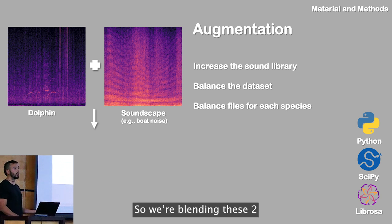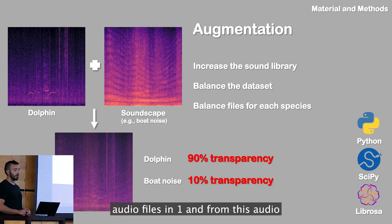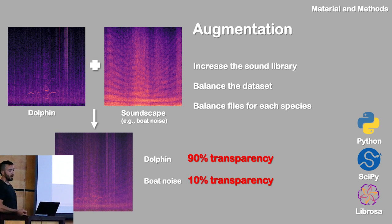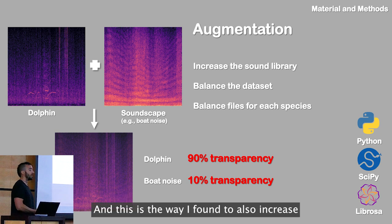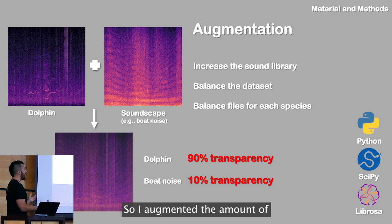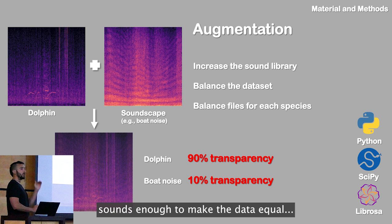We blend the two audio files into one, and from this audio we build a spectrogram image of 200 by 200 pixels. This is the approach I found to also increase the sound library through augmentation, and also to balance the dataset — creating enough augmented sounds to make the data equal and balanced across classes.